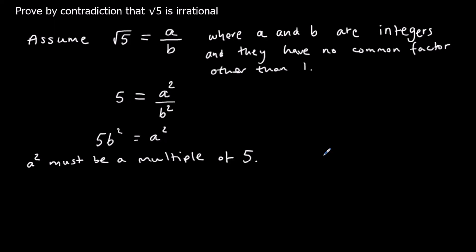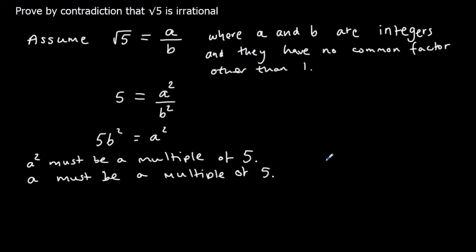A squared is definitely a multiple of five, meaning five is a factor of A squared. Any prime factor of A squared must be a factor of A, so A must also be a multiple of five. The prime factors in a square number are exactly the same as the prime factors of the number that was squared — you just have twice as many of them multiplied together.